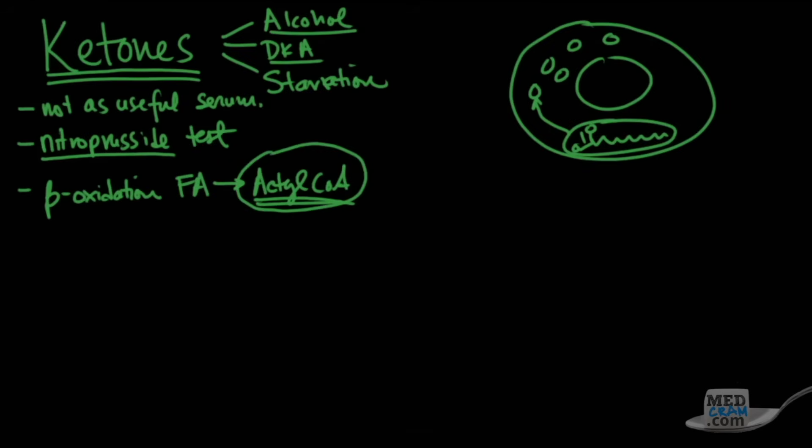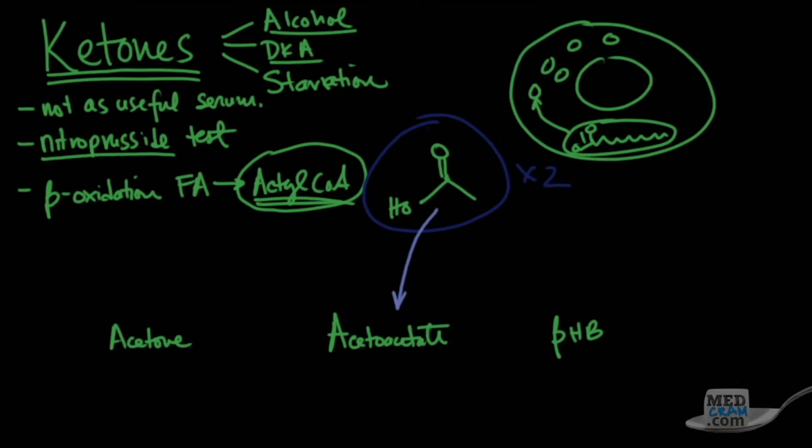And normally that acetyl-CoA, as you already know, should go into the Krebs cycle. But if there's too much of it around and the Krebs cycle can't handle it, then they start to coalesce with each other. And so if you have this acetyl-CoA, which looks somewhat like this, and you bind these together, you're going to get things like acetoacetate and beta-hydroxybutyrate and acetone. If you have two of these, you're going to make one acetoacetate. And what does acetoacetate look like? It looks like this, and there's one, two, three, four carbons.